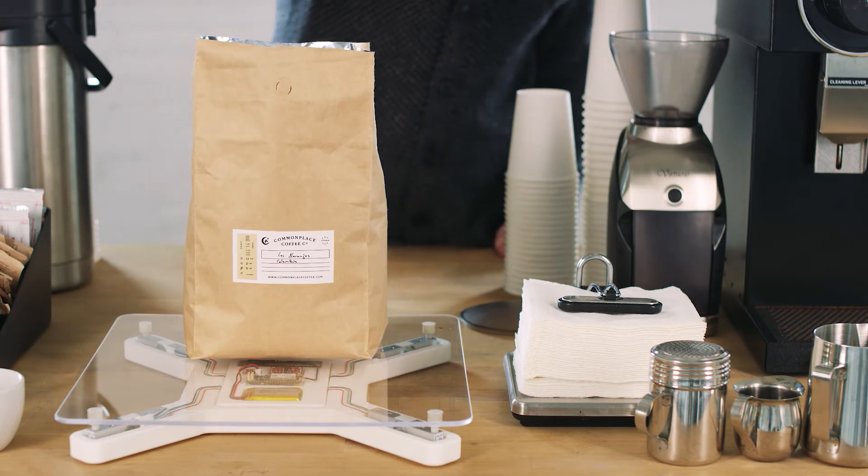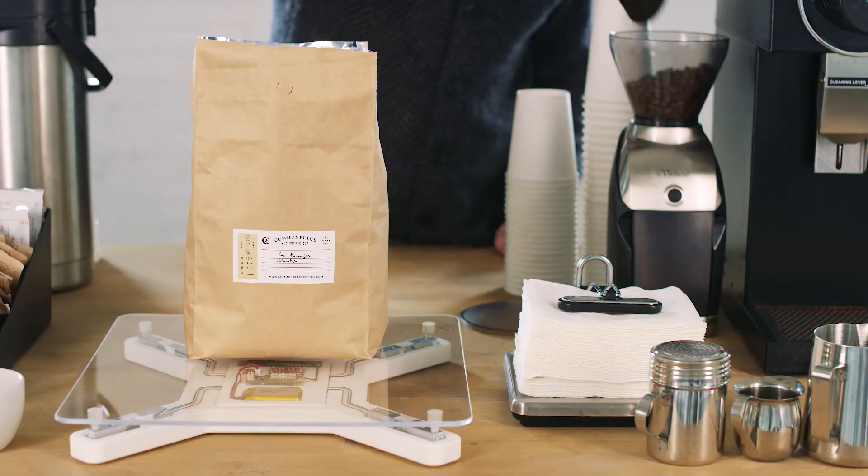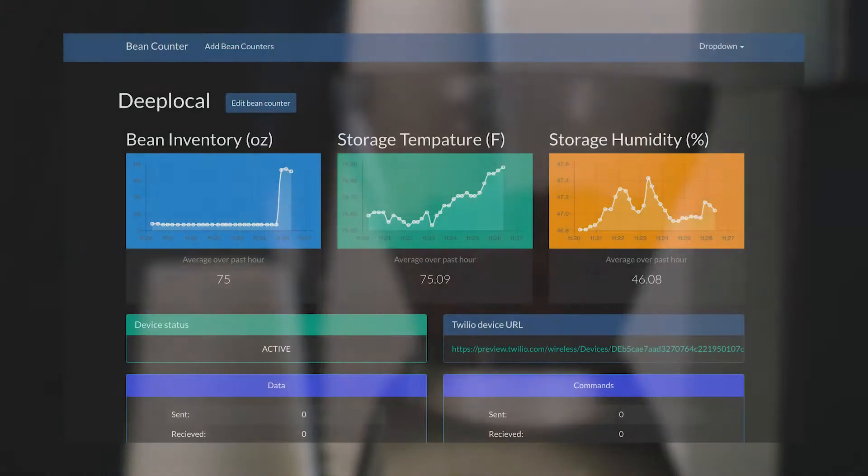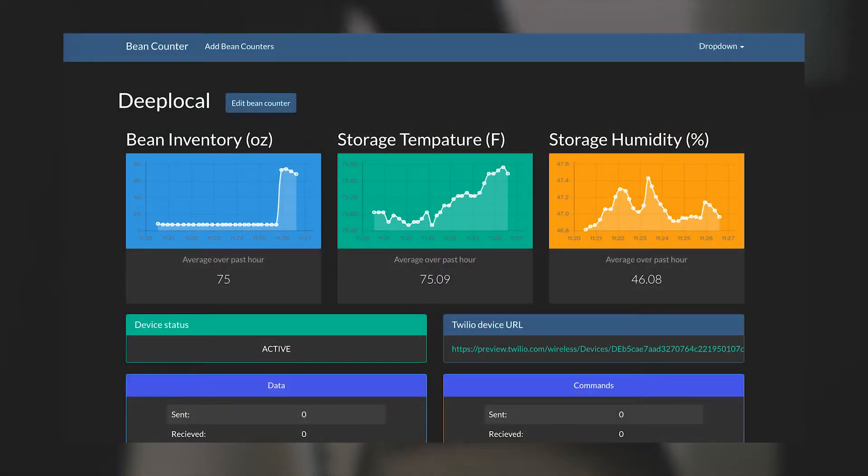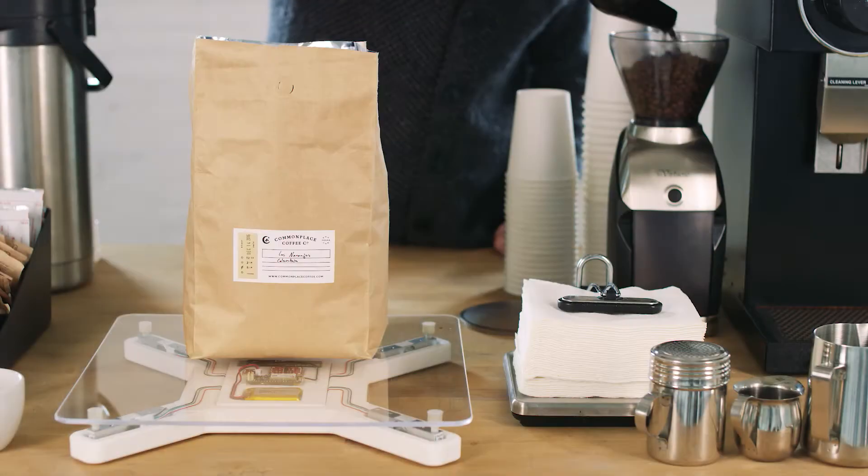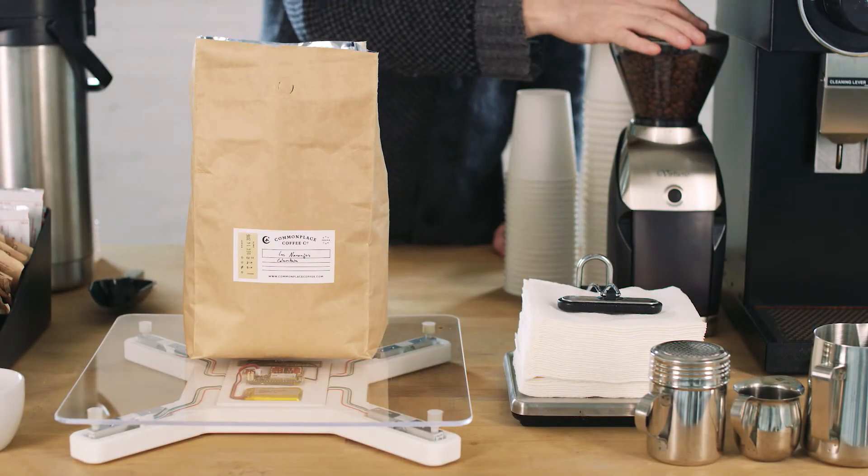All of a client's coffee is stored on the bean counter and it wirelessly reports usage back to the roaster so they can see how fast coffee is being used and better plan which beans they roast and when. The SmartScale will automatically place requests for coffee to be delivered when bean count is low so they can deliver coffee exactly when their clients need it based on actual consumption.